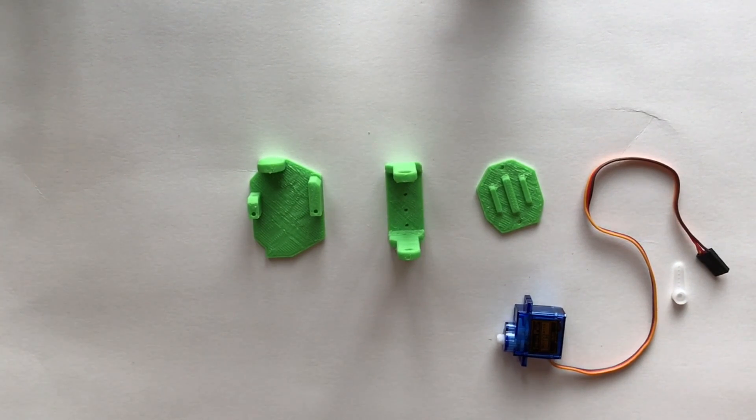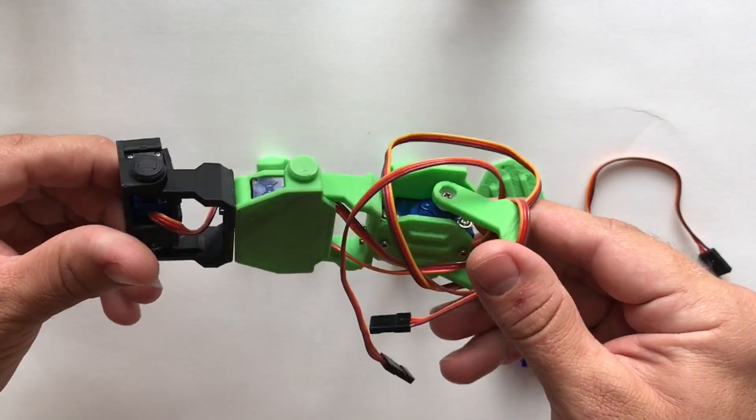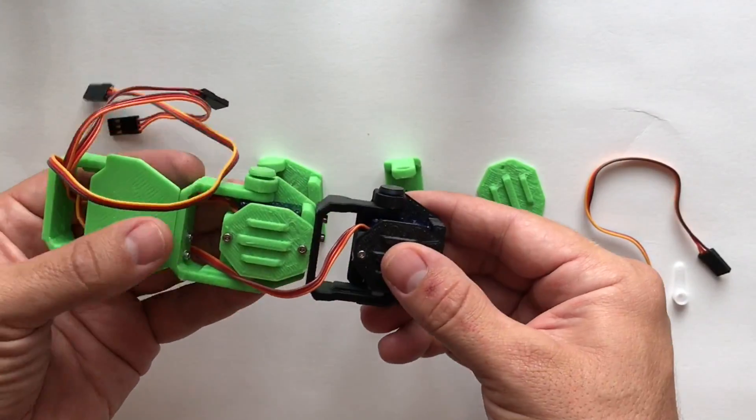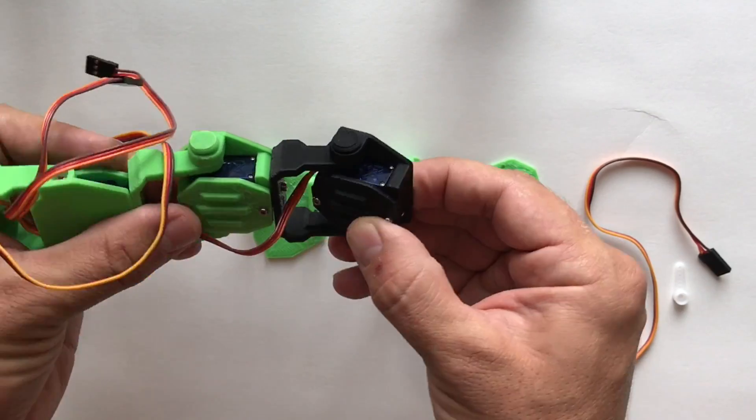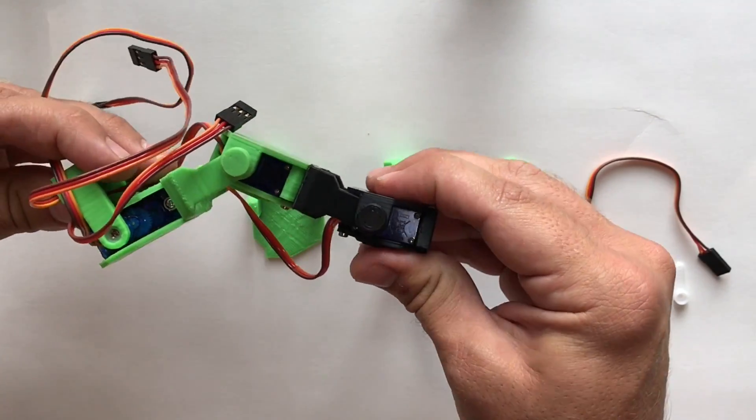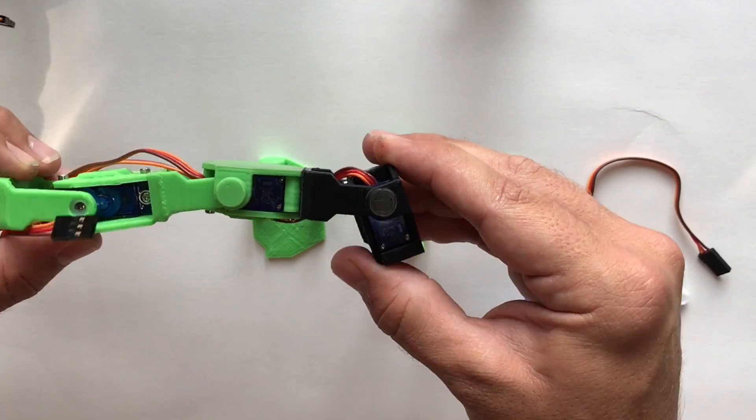Once you have this printed, it's pretty easy to assemble. The first thing you want to determine is if you're stacking them. I have two going facing forward so they both pivot in the same direction, and then I flipped one around so it pivots in the opposite direction. If you're doing something like that, you want to figure out your configuration before you start assembling.